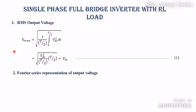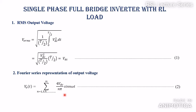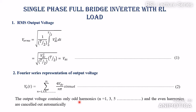Next is the Fourier series representation of the output voltage. The Fourier series expression for the load voltage is: V0(t) = Σ (n = 1, 3, 5, … to ∞) [4VDC / (nπ)] · sin(nωt). This is in the form Vm·sin(ωt), where the maximum value Vm = 4VDC/(nπ). Here we have only odd harmonics; even harmonics cancel out automatically.